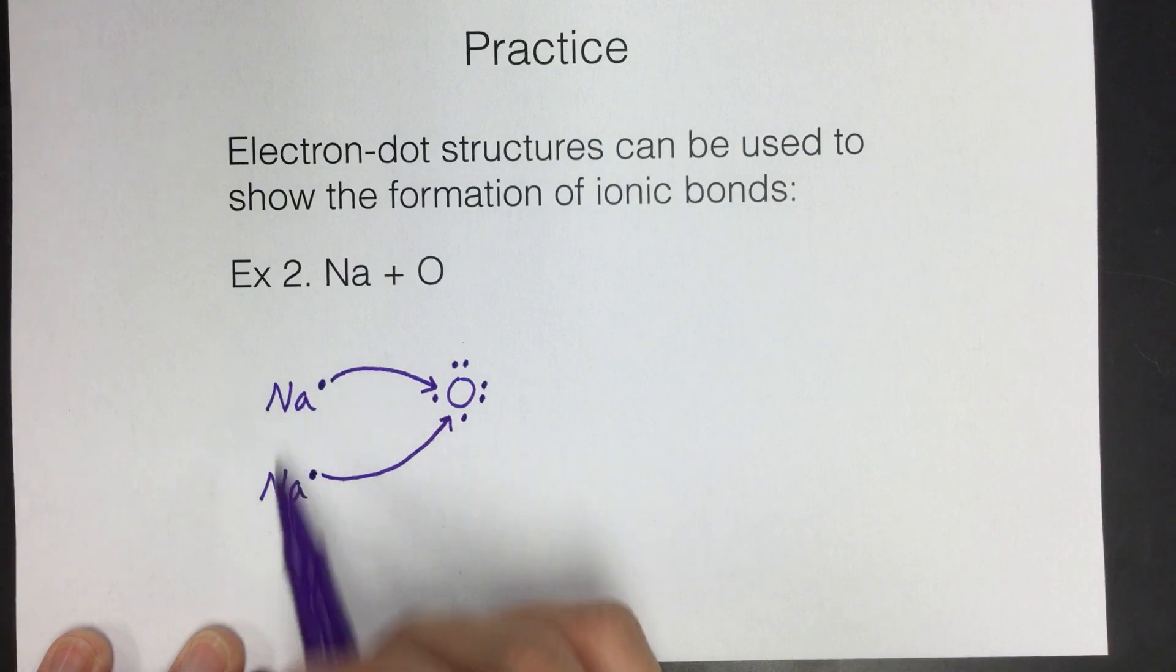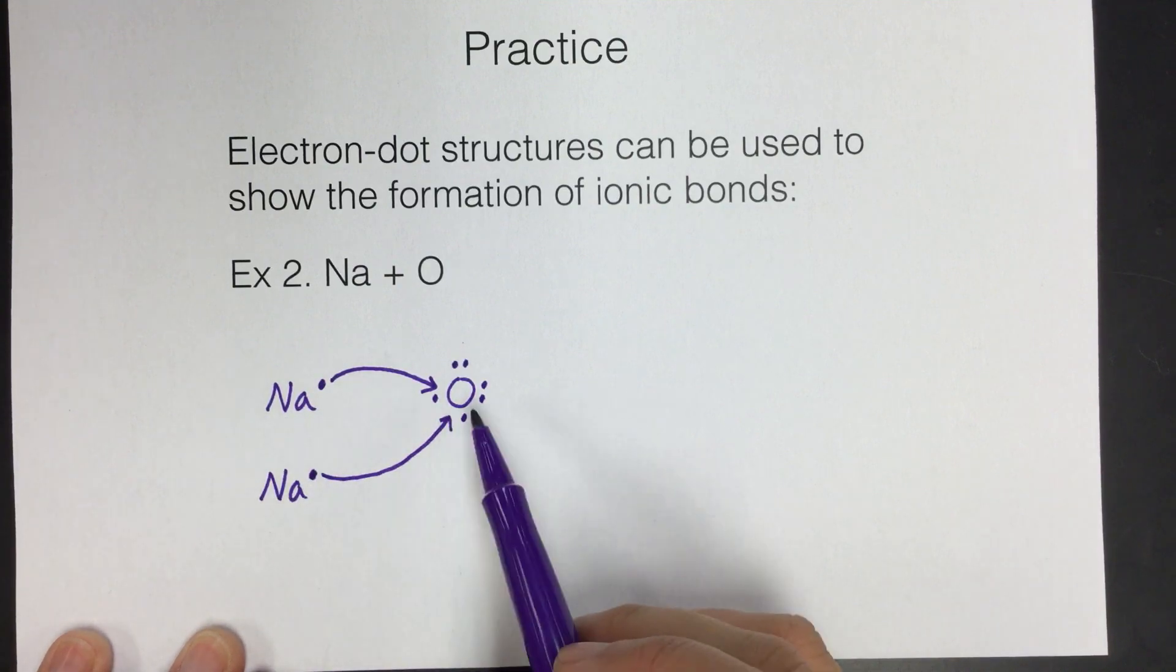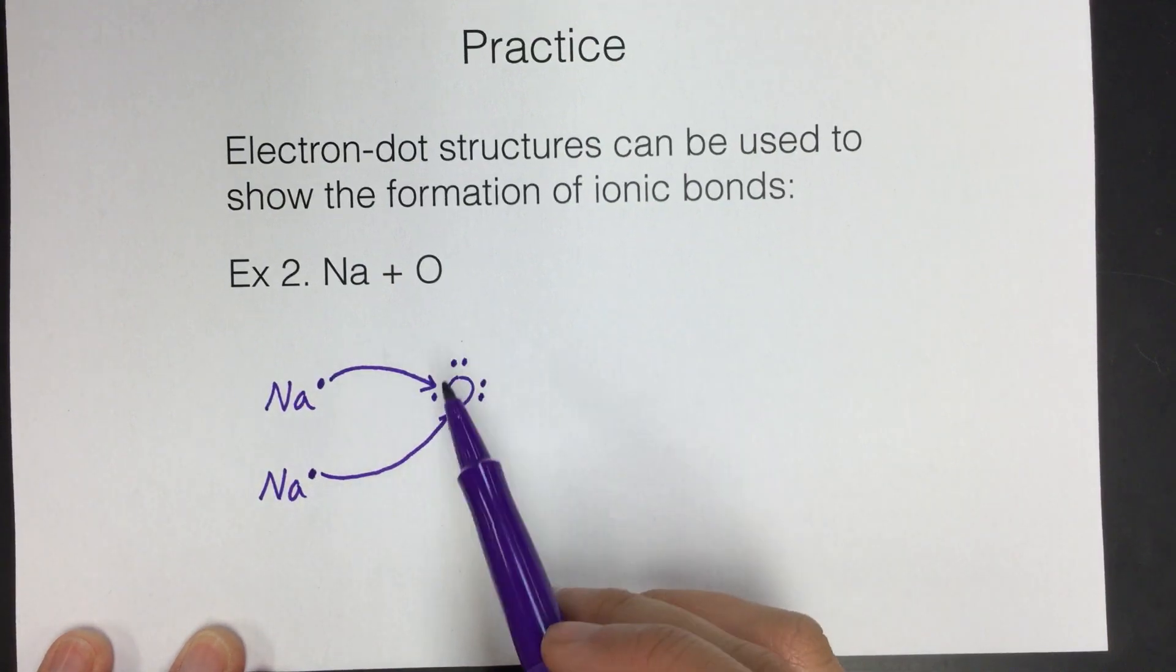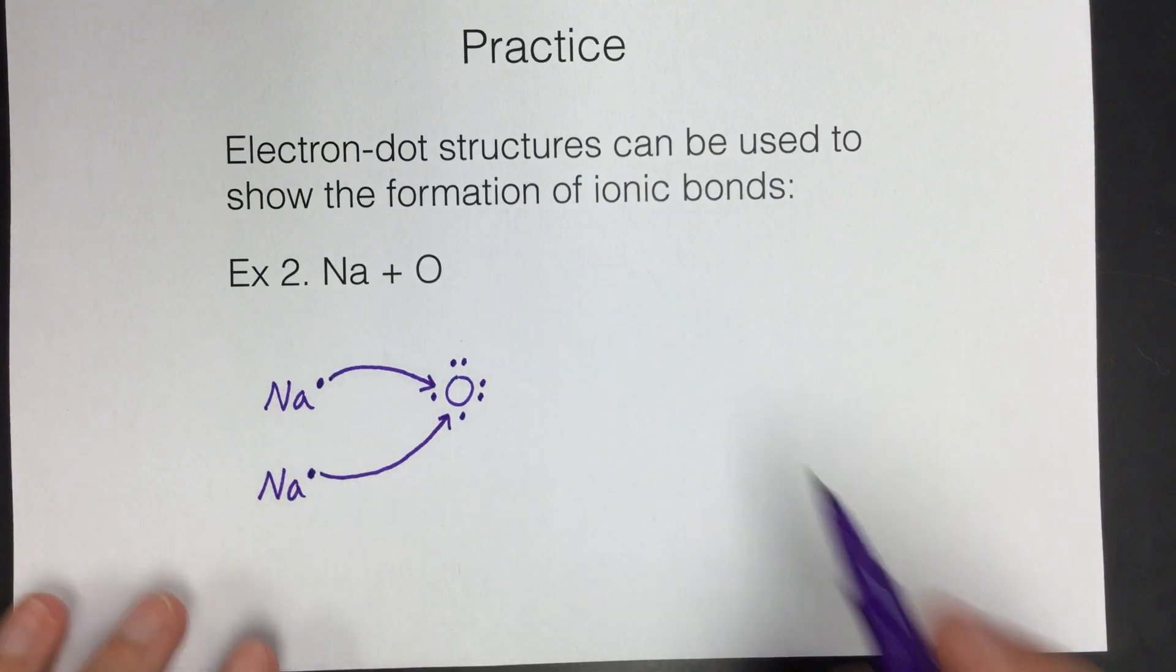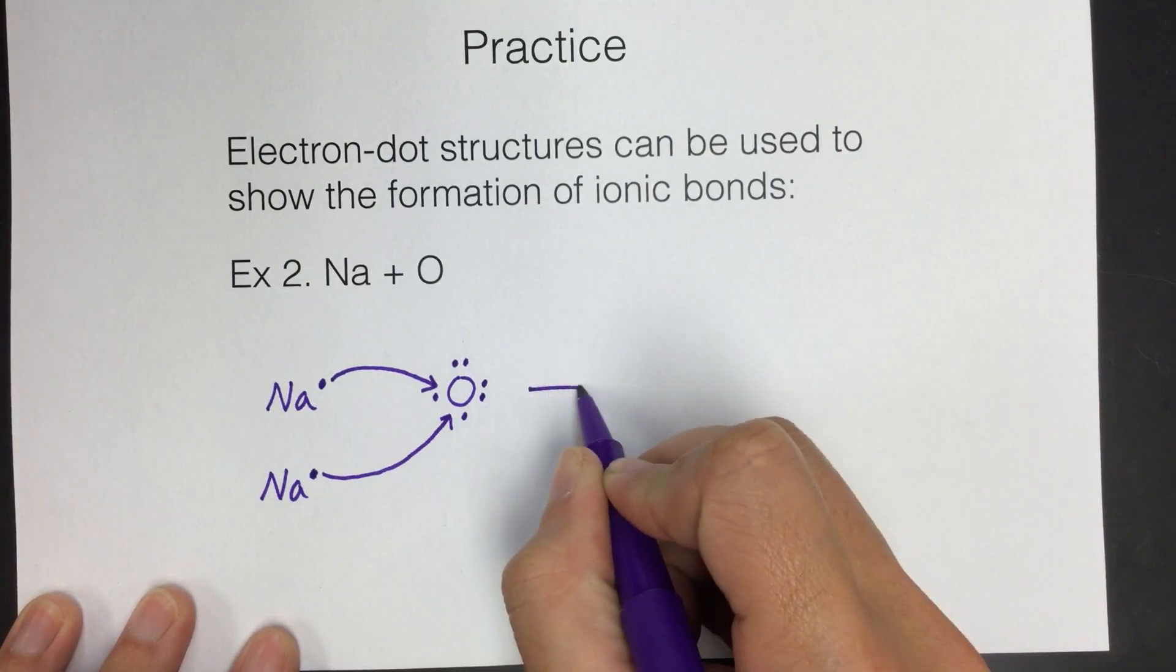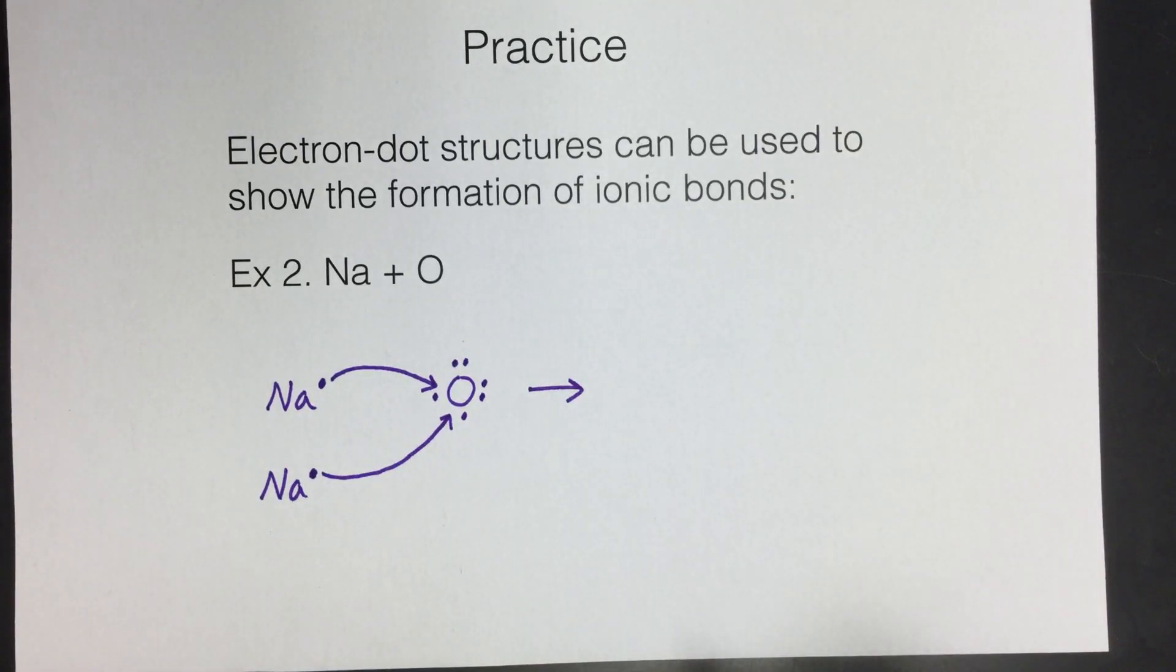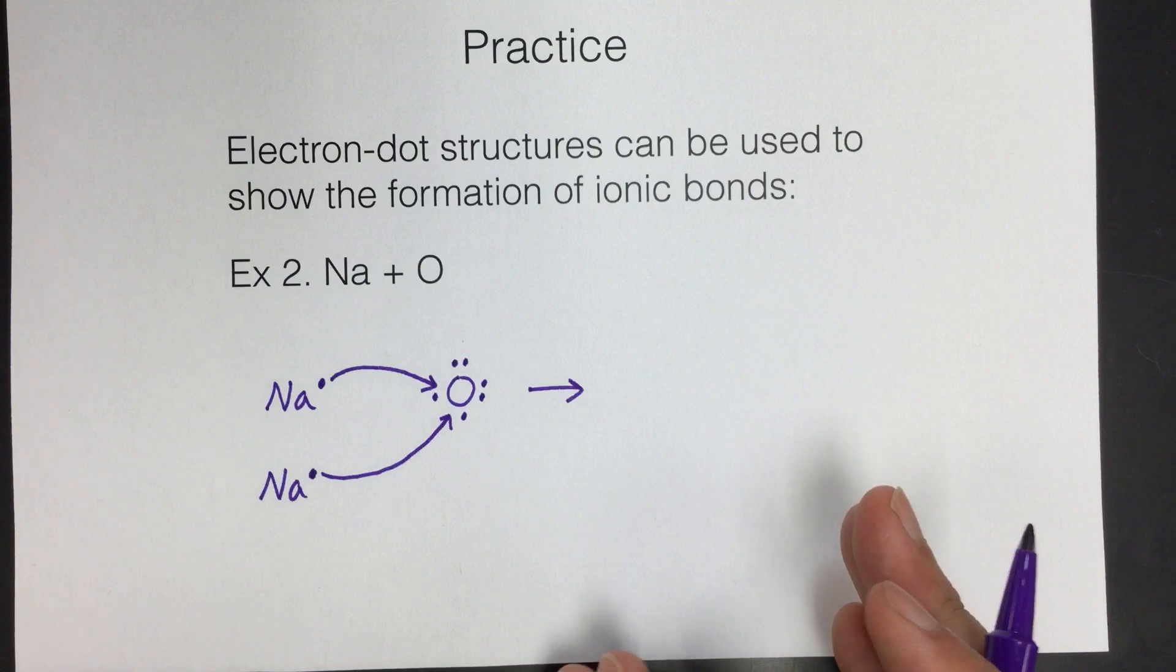So what we can do is we can bring in another sodium, which also has one valence electron, and then it can give away its electron to the other spot. And this sodium is also happy because it wanted to get rid of its one electron too. So these sodiums are both happy. They got rid of their one electron. The oxygen is now happy because it has gained two to go from six to eight. So now everyone's happy. And so we can draw our regular arrow here and show what it looks like in the end after this has happened.